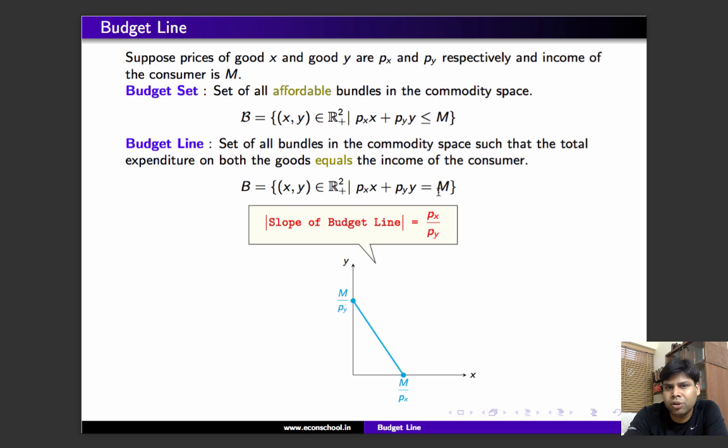I'm going to use the word slope interchangeably with absolute value of the slope in later videos. So whenever I say the slope of the budget line, I'll be referring to the absolute value of the slope. Here, the absolute value of the slope of the budget line is px/py.